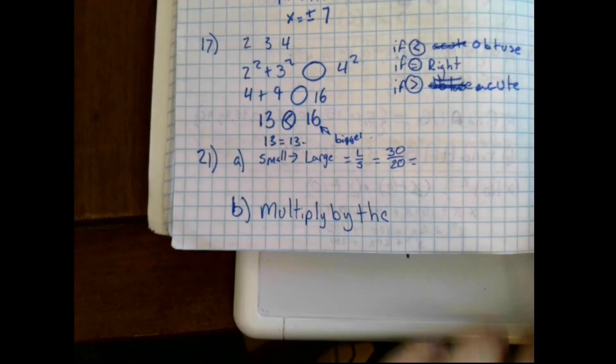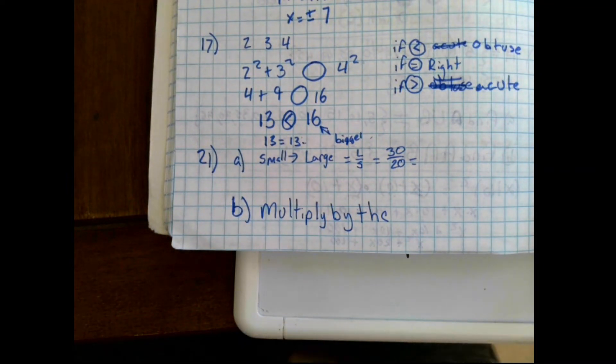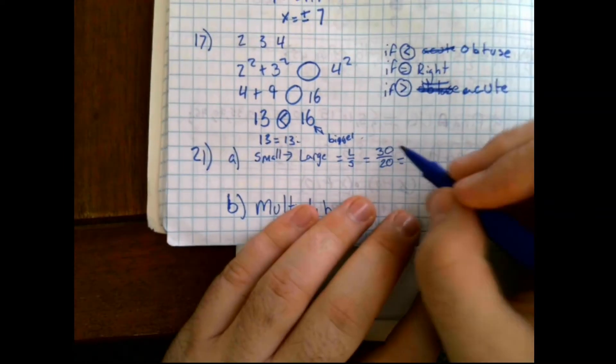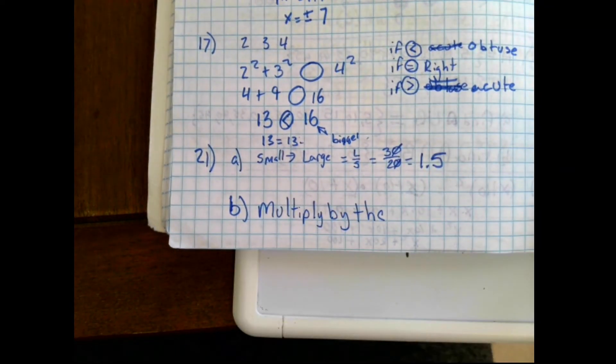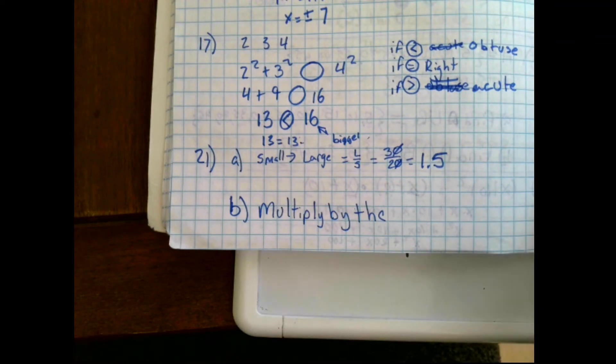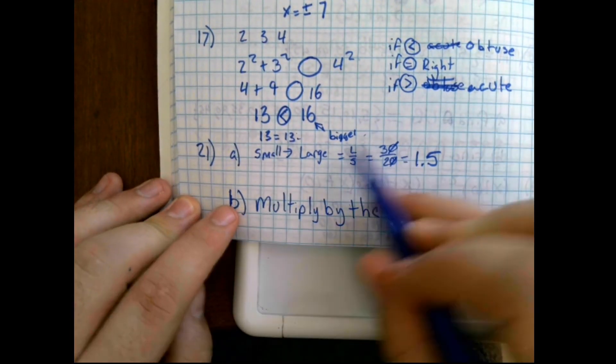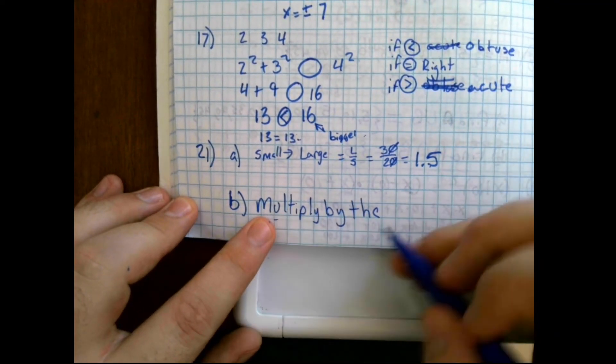Alright, now, question 21 and 22 are based off of the same trapezoid. It asks, what's the scale factor from small to large? Well, to do that, you would take the large and you would divide it by the small. You just pick one corresponding side. I chose the side 30 and 20. Because it's easy to cancel out the zeros and get 3 divided by 2, which is 1.5. Part B asks, how would you find the perimeter of the large trapezoid if you knew the perimeter of the small trapezoid? Well, it's pretty simple. The perimeter is a distance. It is equal to the scale factor. So we're going to multiply by the scale factor.